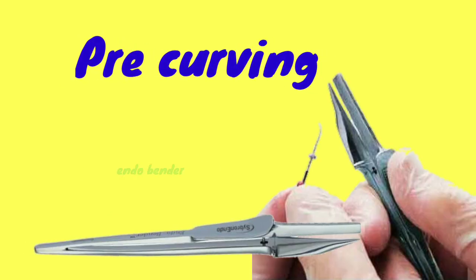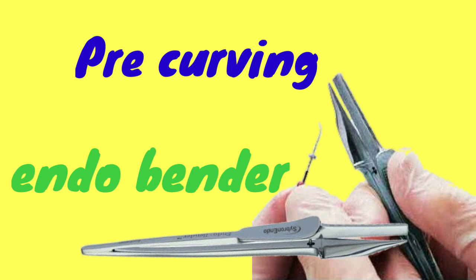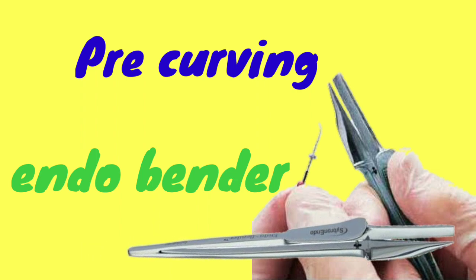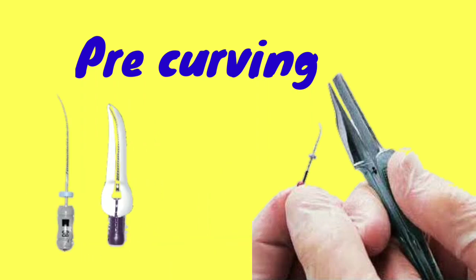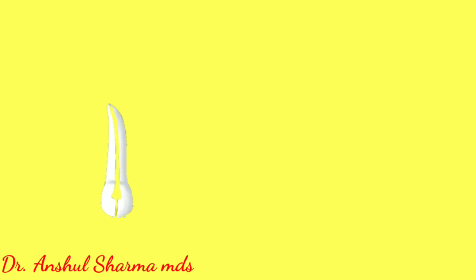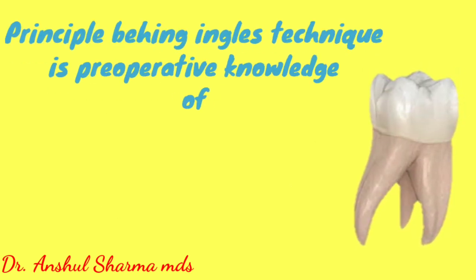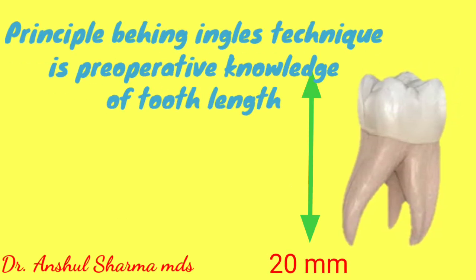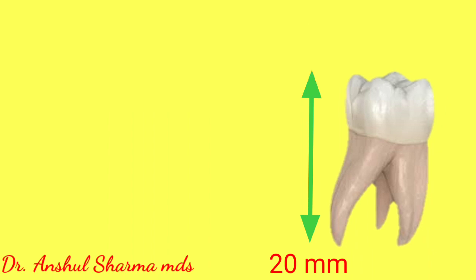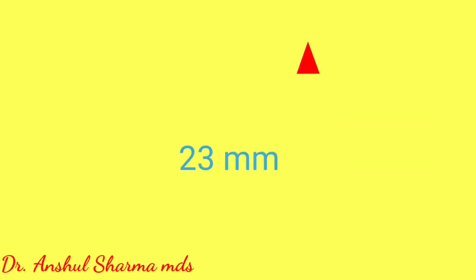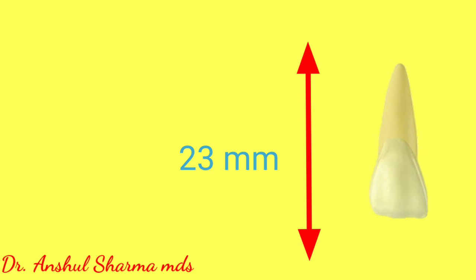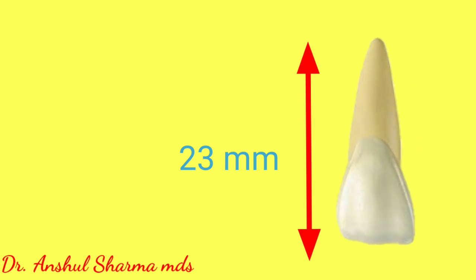Pre-curving is an important phenomenon in the Ingalls radiographic technique; by pre-curving files we can easily manipulate them through curved canals. The principle behind the technique is the preoperative knowledge of the average length of every tooth — for example, the central incisor has an average length of 23 millimeters.